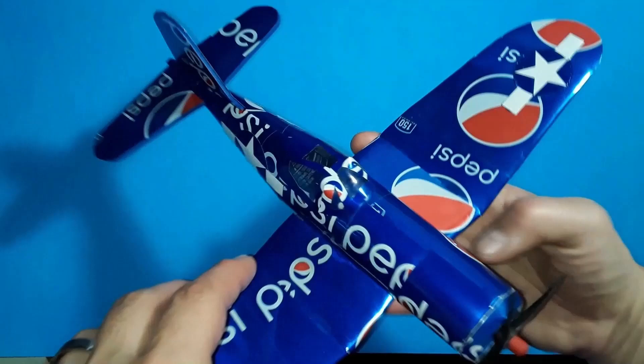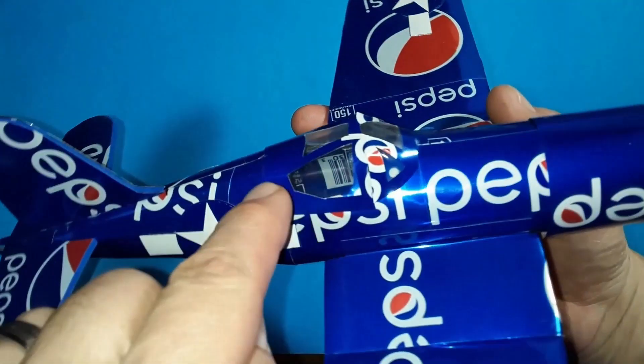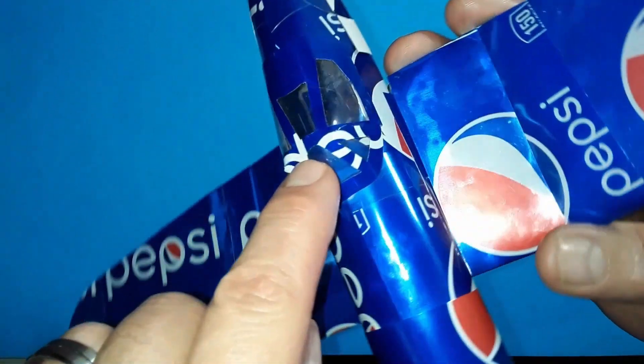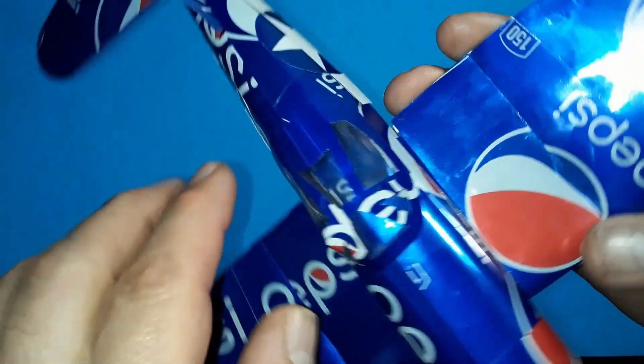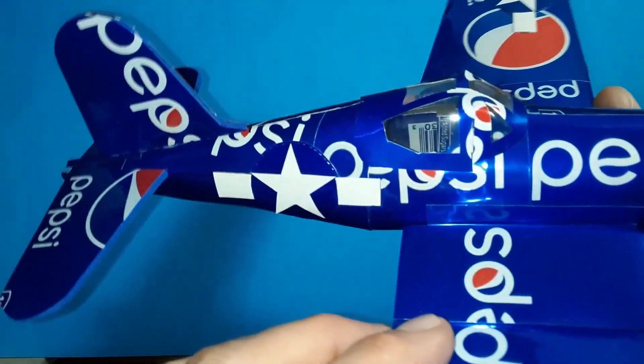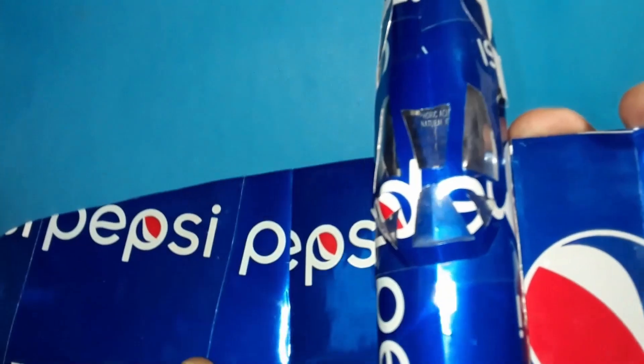Third, a lazy canopy can kill your soda can airplane. Use clear vinyl combined with can, or just use different colored can like we showed with our MiG-21 to make better canopies.